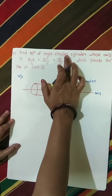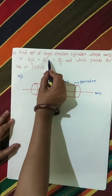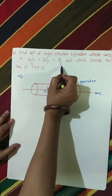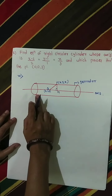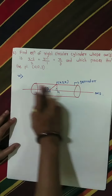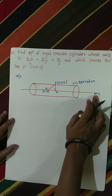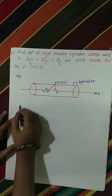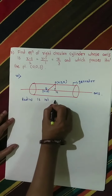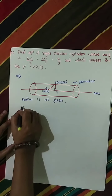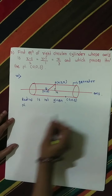Find the equation of a right circular cylinder whose axis is (x minus 2)/2 = (y minus 1)/1 = z/3 and which passes through the point (0, 0, 3). The radius is not given, and the point (0, 0, 3) lies on the cylinder.